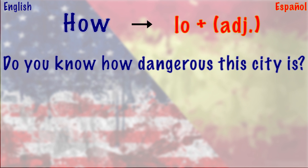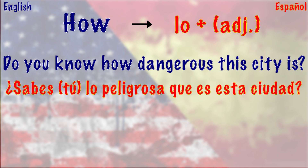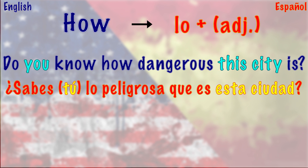'Do you know how dangerous this city is?' becomes '¿Sabes lo peligrosa que es esta ciudad?' We start with 'you' and later have the subject 'this city,' with 'how' in between — so we translate 'how' using 'lo' plus the adjective. Notice that the adjective 'peligrosa' ends in 'a' to match the noun 'ciudad.'